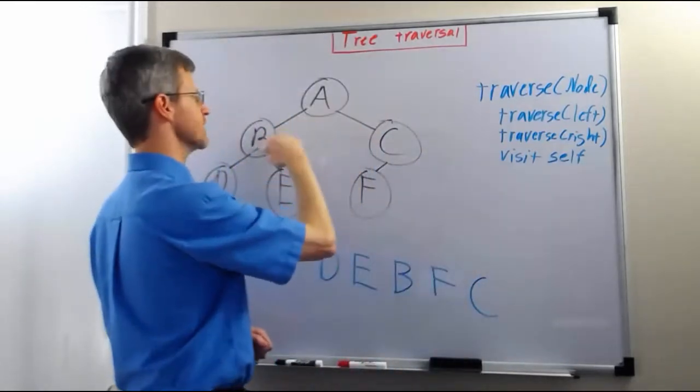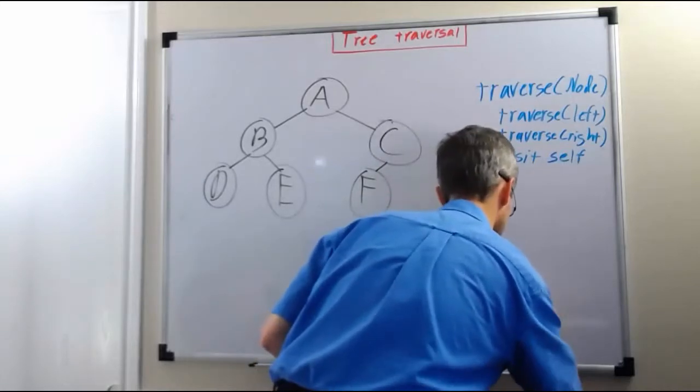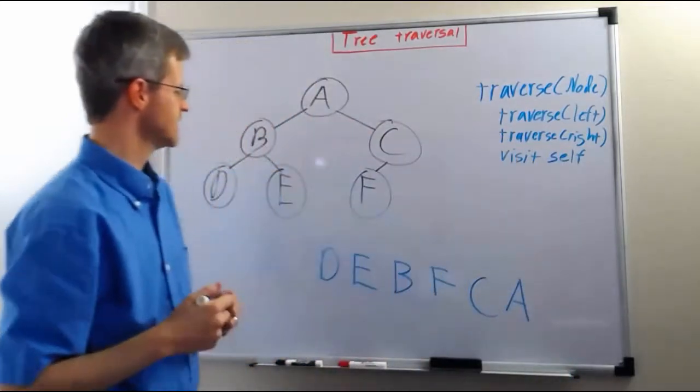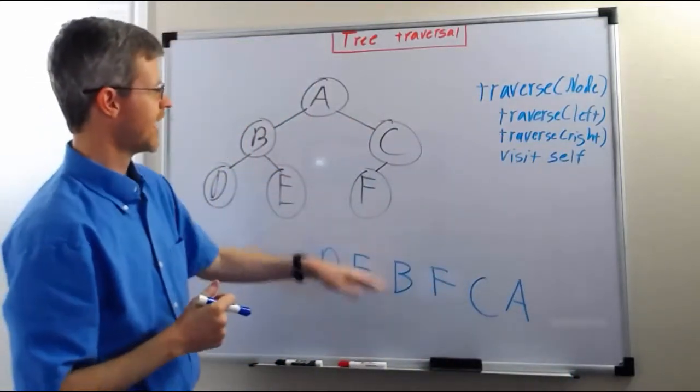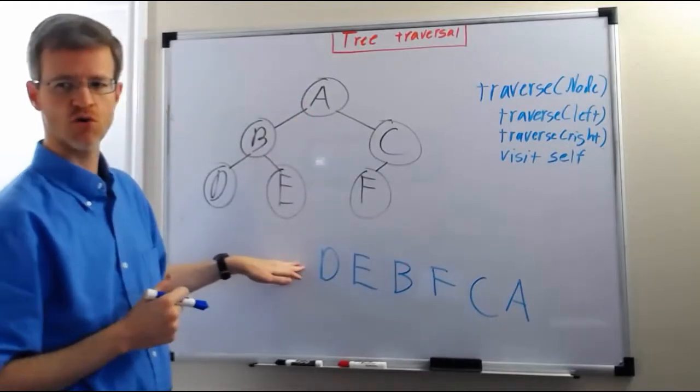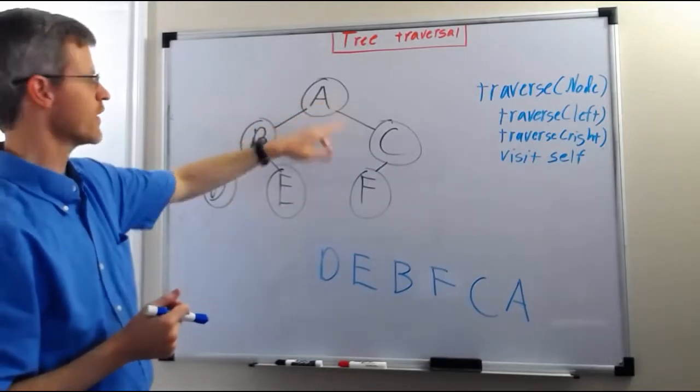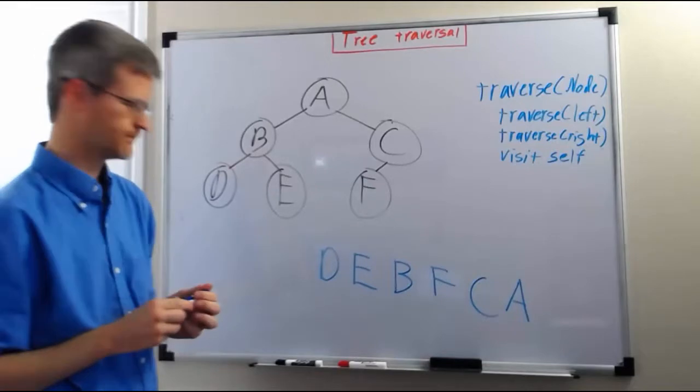Then we come back up to A, we've been left, we've been right, so now we do the visit self. And so, this is the order of traversal that, this is the order of visiting that is yielded by a post-order traversal, where we don't visit the parent until visiting, or visit the node that we are, until visiting both of its children.